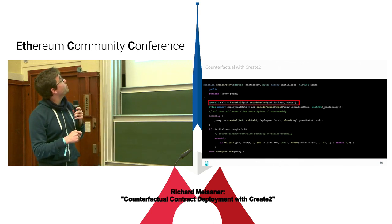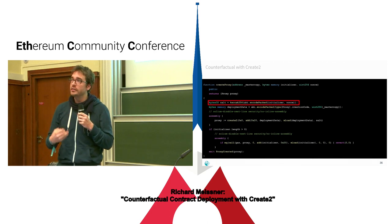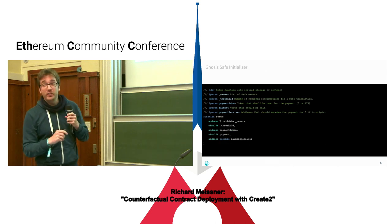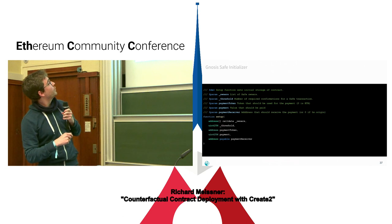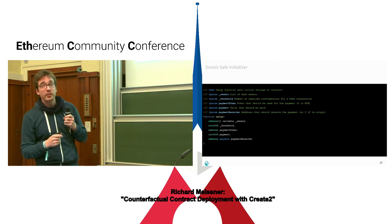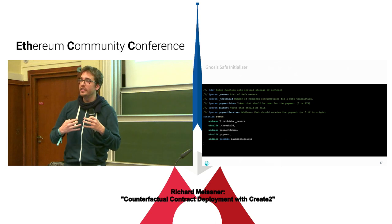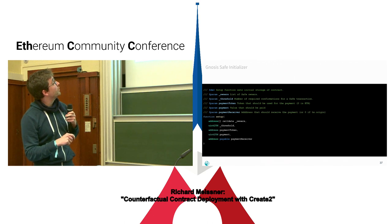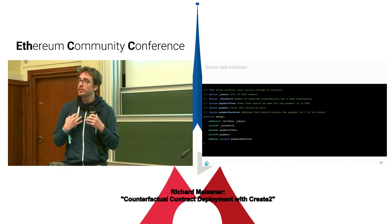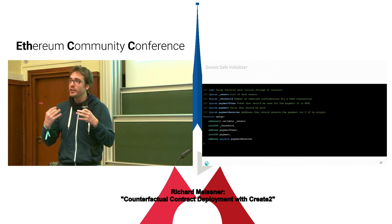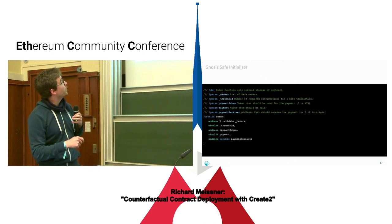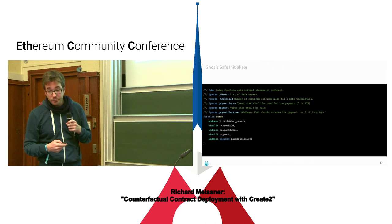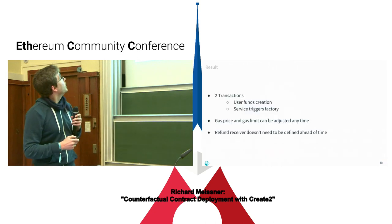This is important both for the client and for us when deploying the Gnosis Safe. The initializer includes the owners, the threshold — which the client wouldn't want changed — and information about refund payments. Our service needs to be refunded, so we need to ensure these parameters cannot be altered by anyone else.